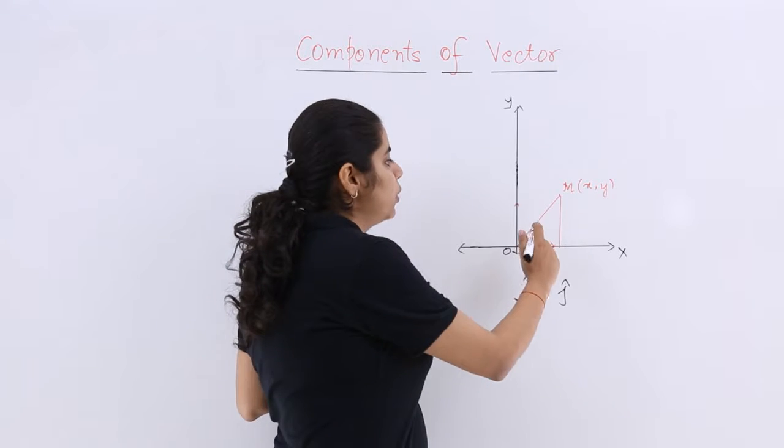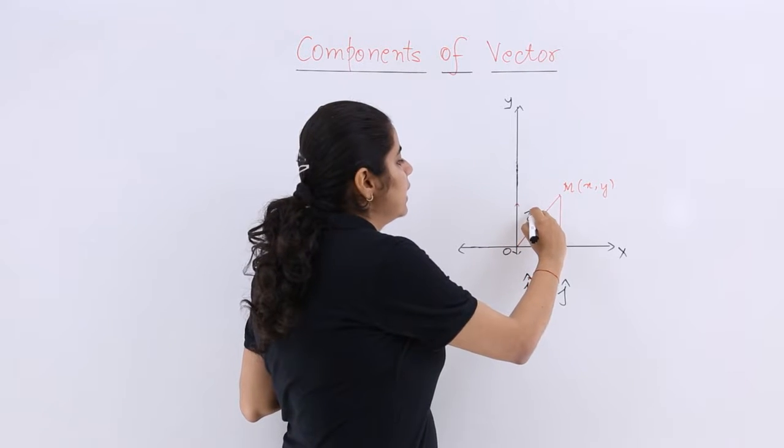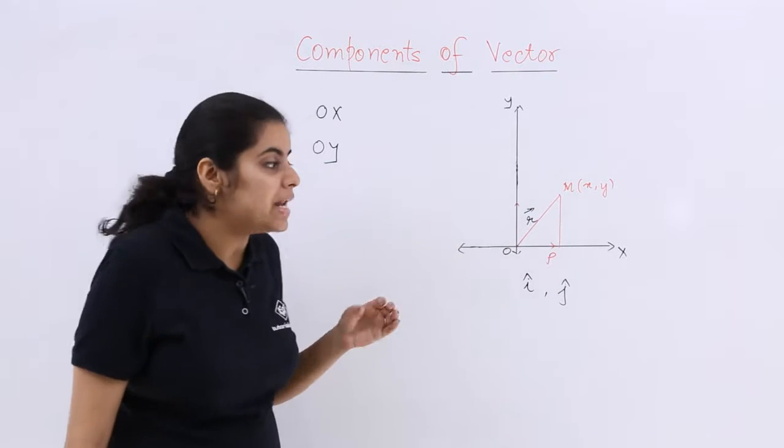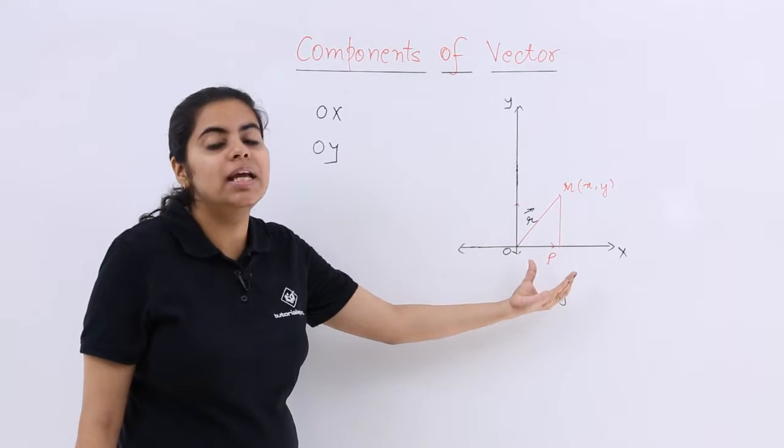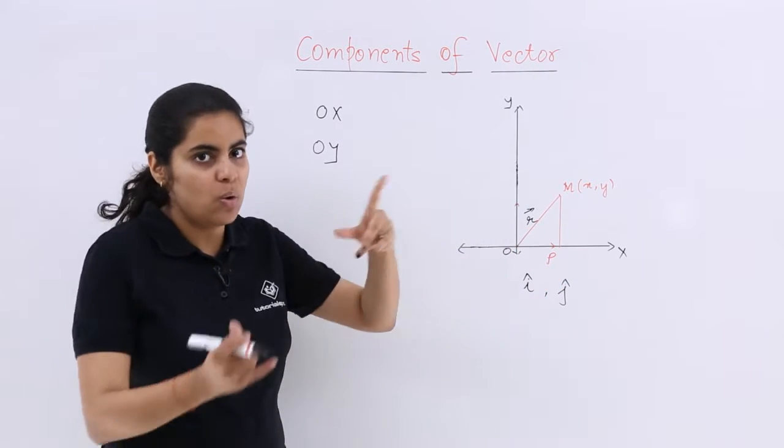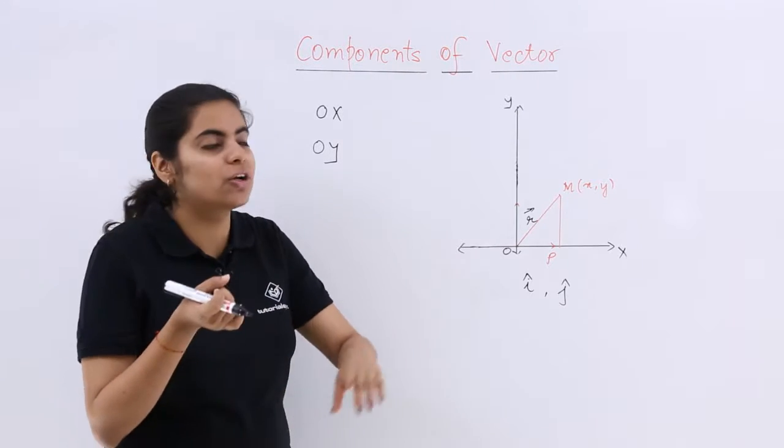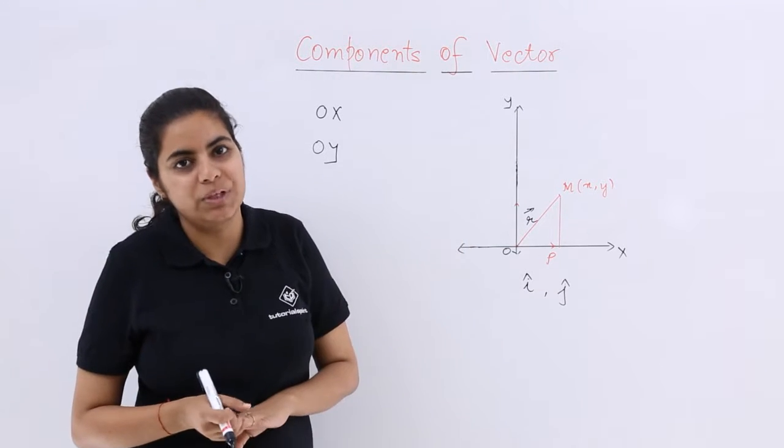Also the resultant would be what? The resultant can be taken as r vector and r vector will be what? It will be nothing but with the help of these two components. One will be the horizontal component, the other will be the vertical component.